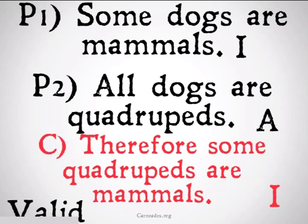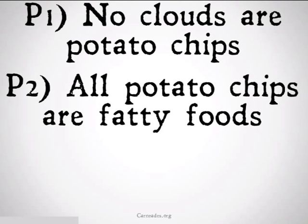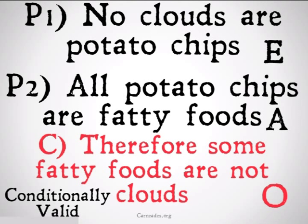We can also have categorical syllogisms that look like: no clouds are potato chips, all potato chips are fatty foods, therefore some fatty foods are not clouds. This is an EAO categorical syllogism, and it's going to be something called conditionally valid. That means it's not valid for Boolean or the modern interpretation, and it's only valid for Aristotle if a specific term in this argument exists — in this case, the middle term, potato chips.